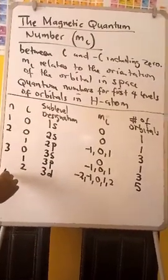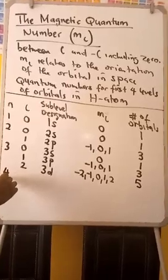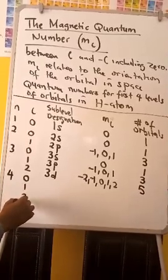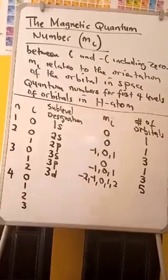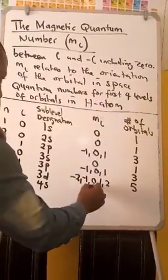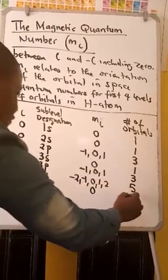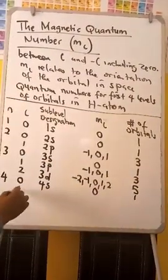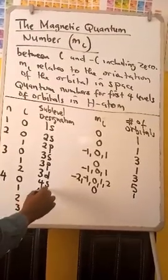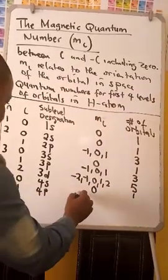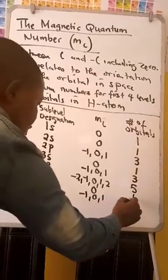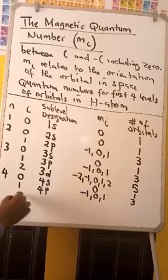Then we go to N equal to 4. L has values 0, 1, 2, and 3. When L is 0, this is 4S; ML is 0; number of orbitals: 1. When L is 1, this is 4P; ML is negative 1, 0, and 1; number of orbitals: 3.